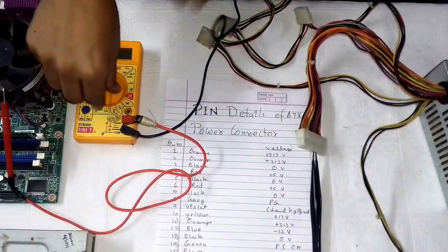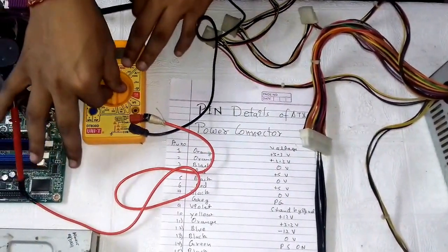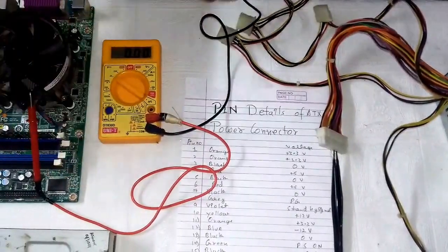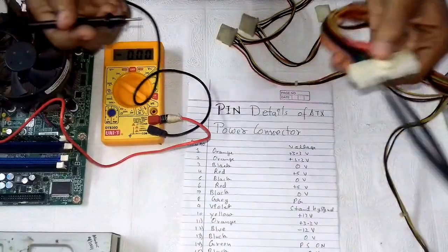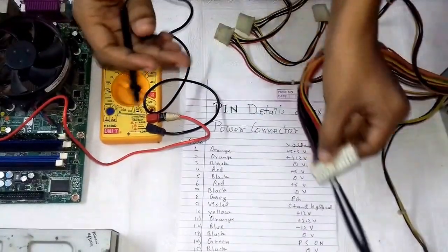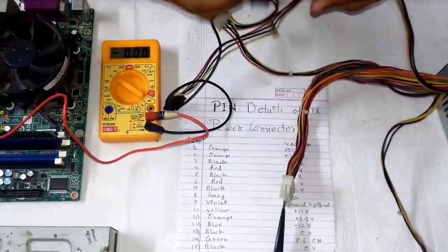For this, put the multimeter at 20 direct current and make any of the black wires to the ground. In this case, I am making this black wire to the ground.